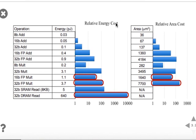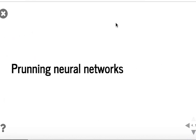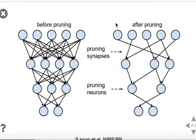We can see that working with calculations and communication using fewer bit representations actually saves you a lot of power. So the first way to reduce computational complexity is by pruning your neural network.